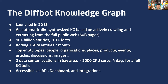The DiffBot knowledge graph — we launched it, meaning we made it commercially available to the outside world, in 2018. So it's been about two years in commercial operation. It's an automatically synthesized knowledge graph based on us actively crawling and extracting from the full public web. Besides Google and Bing, we're sort of the only other U.S. entity that does full-scale web crawling. Where we differ is what we do with those documents, which I'll explain in the following slides.